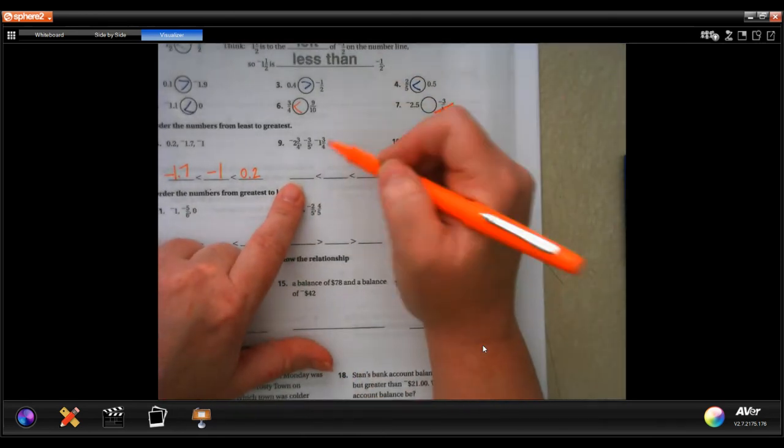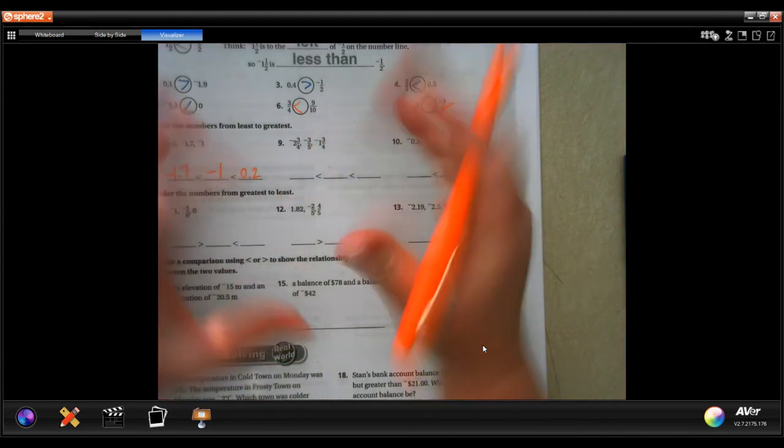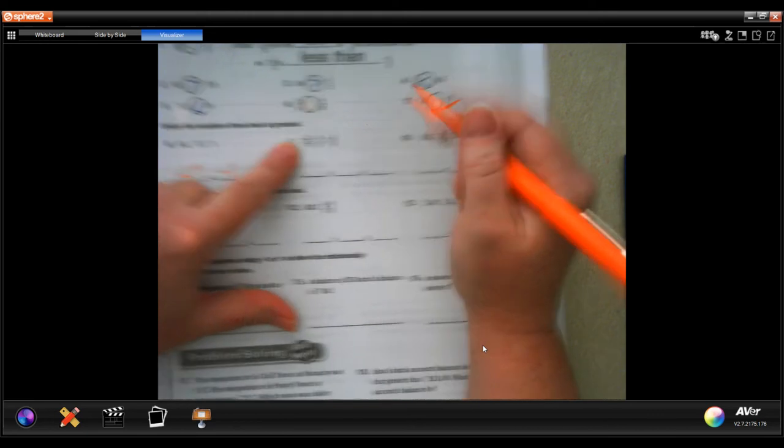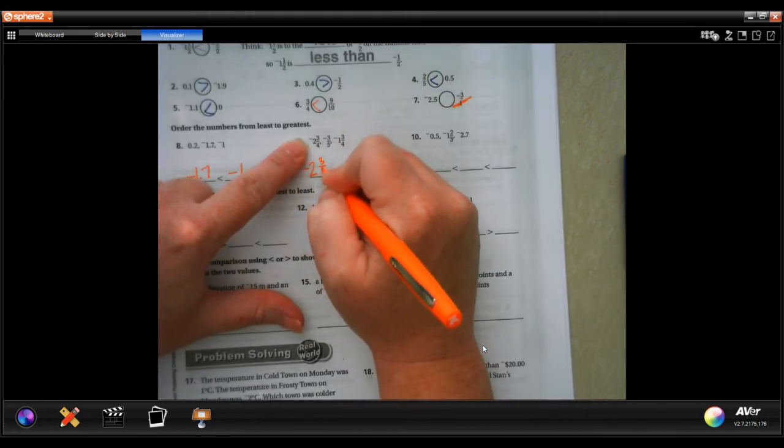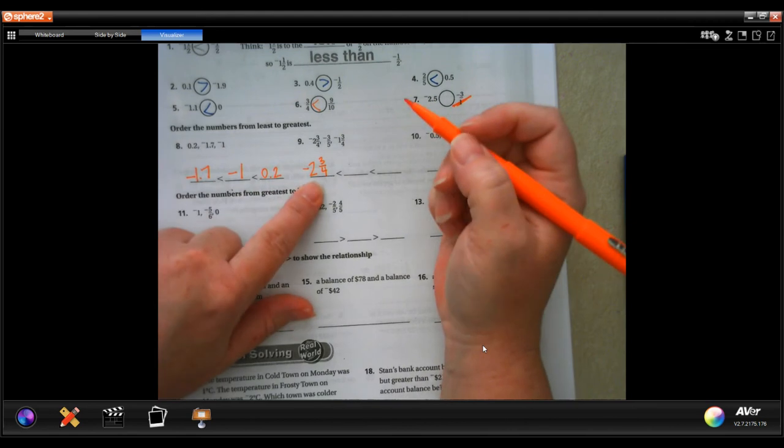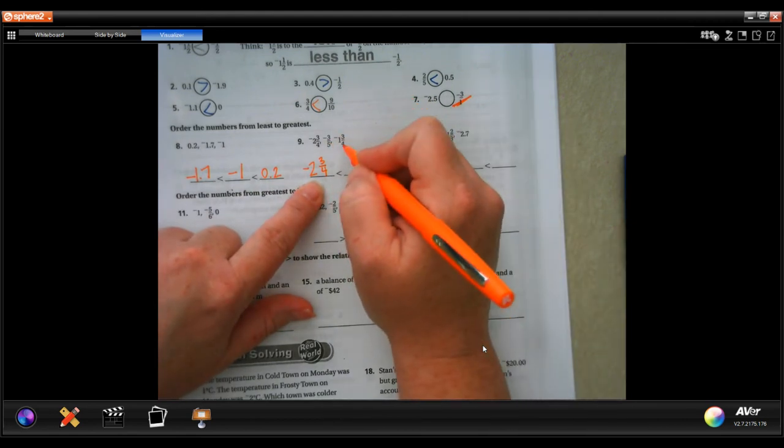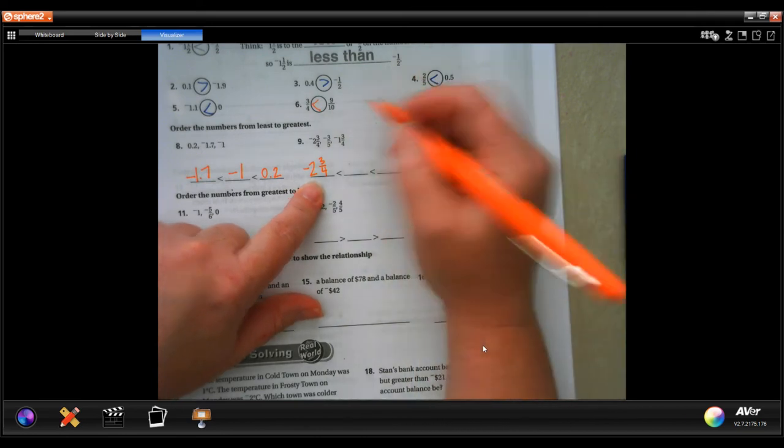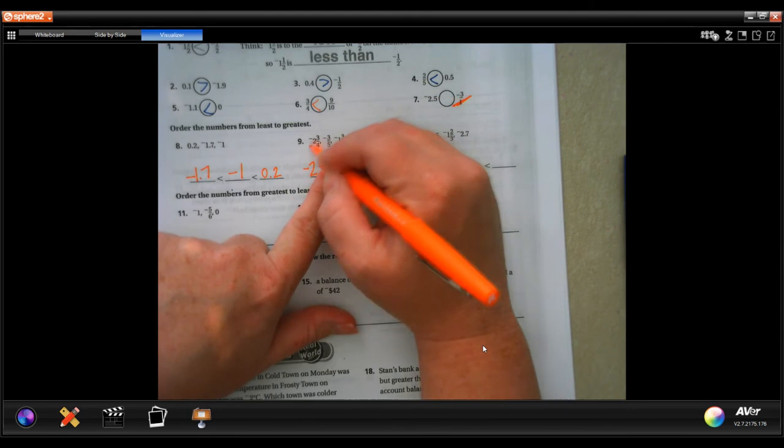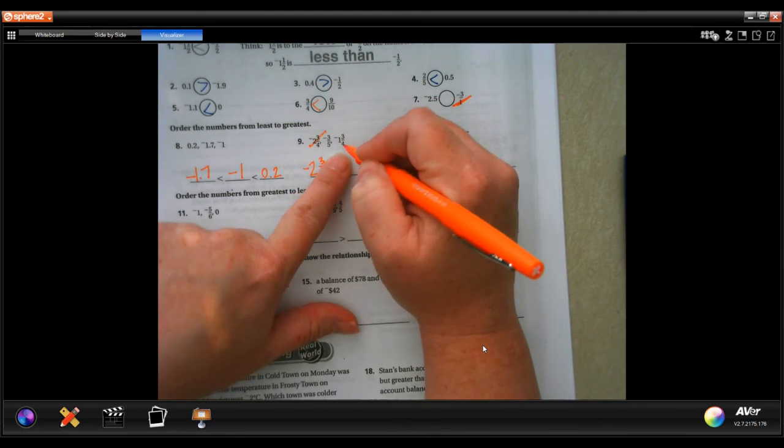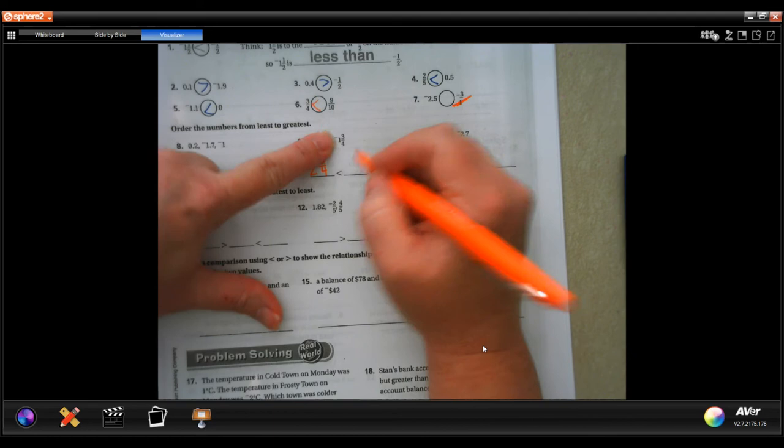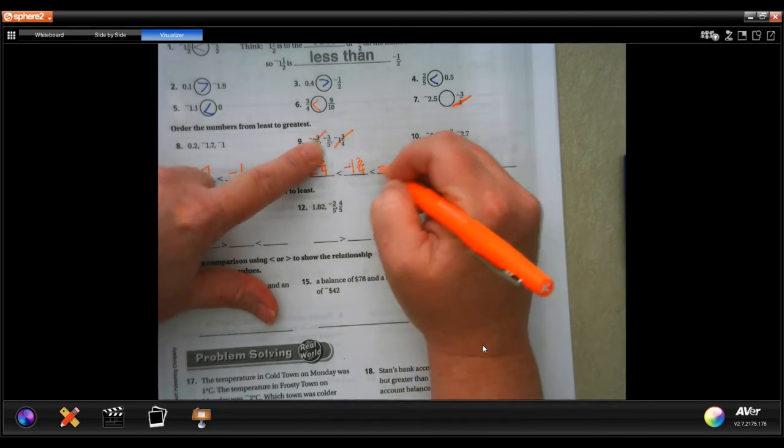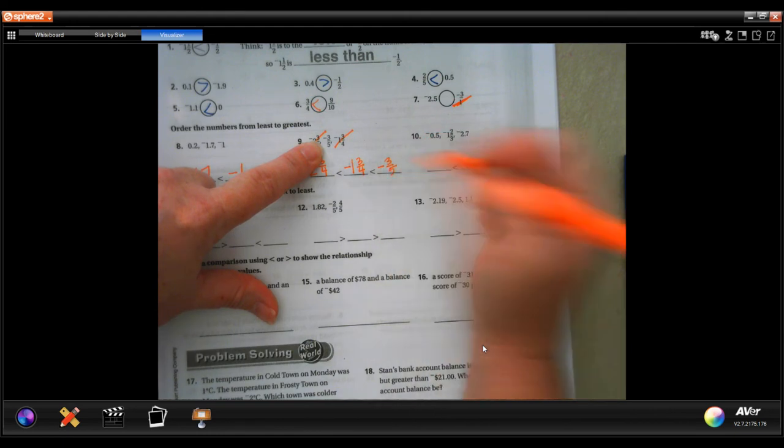So least to greatest, these are negative. So it means that the number that looks the biggest is going to be the smallest, so negative 2 and 3 quarters. It looks the biggest because it's 2 and 3 quarters, and this doesn't even have a whole number, and that has a 1, but it's negative, which means it's further away from 0. Then this one doesn't have a whole number, and this one does. That means that this one's going to be next, negative 1 and 3 quarters, which only leaves me with negative 3 fifths.